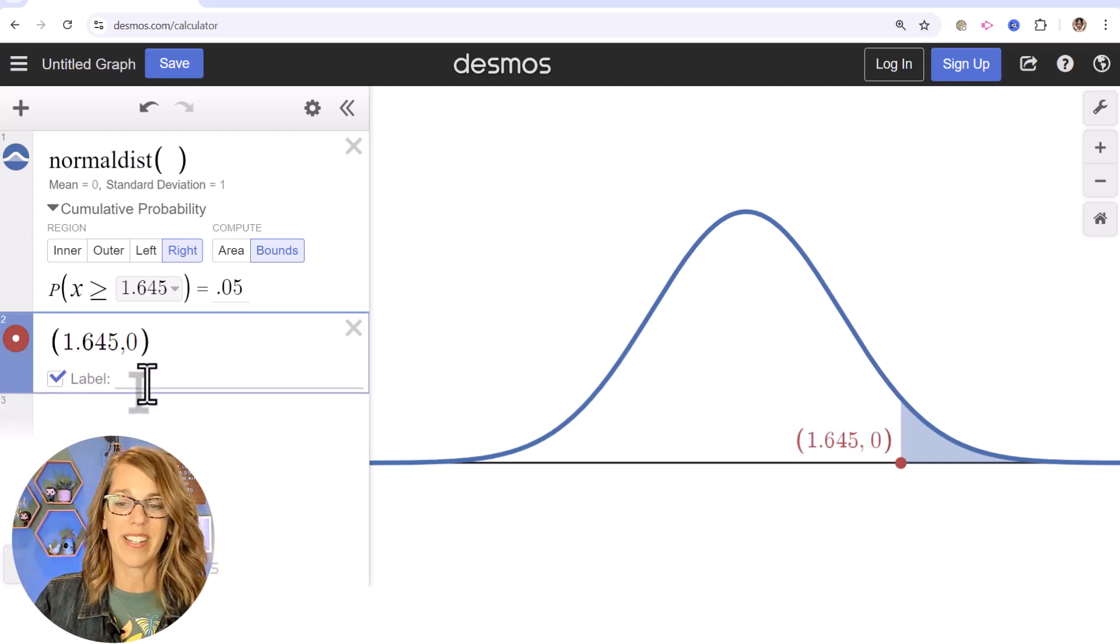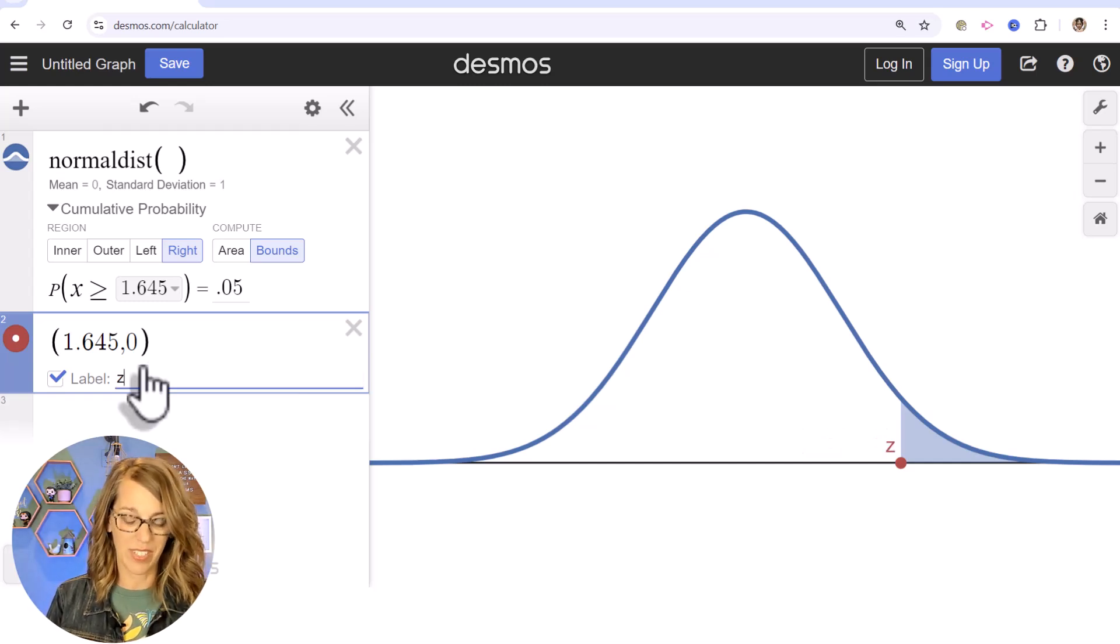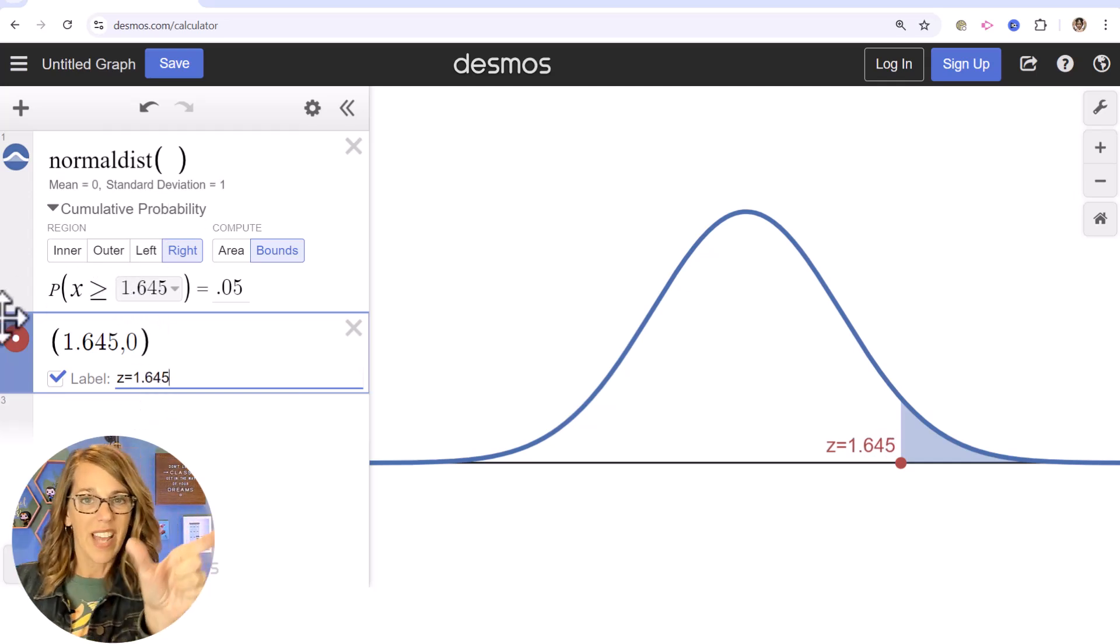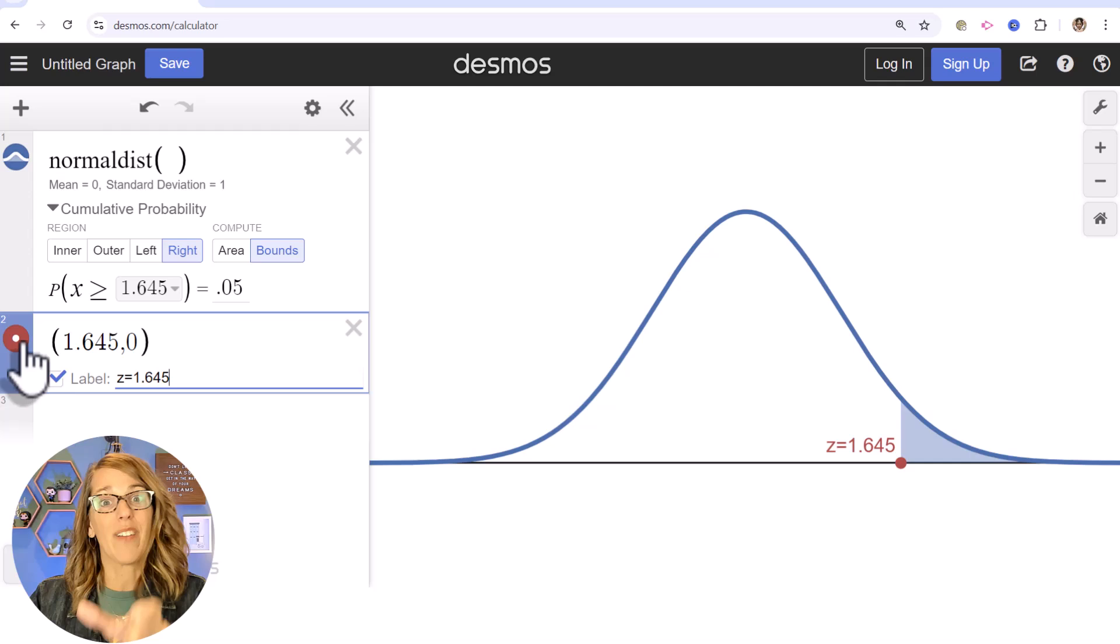That point has an x value of 1.645. So parentheses 1.645 and a y value of 0 comma 0. And I want to label this point. And I'm going to label that point not with the coordinates but instead I want to label it with z equals 1.645.